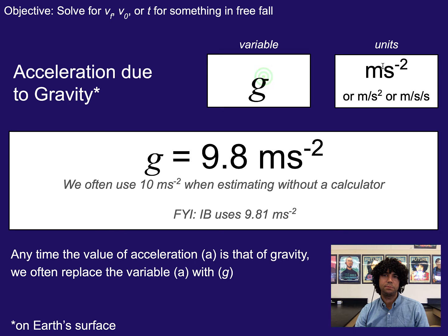The units are meters per second squared because it's just a very specific value of acceleration. You can write those units in either of those ways. And basically what this means is any time we are solving for something that is accelerating due to gravity, we can just plug in this value for g in the place of acceleration.